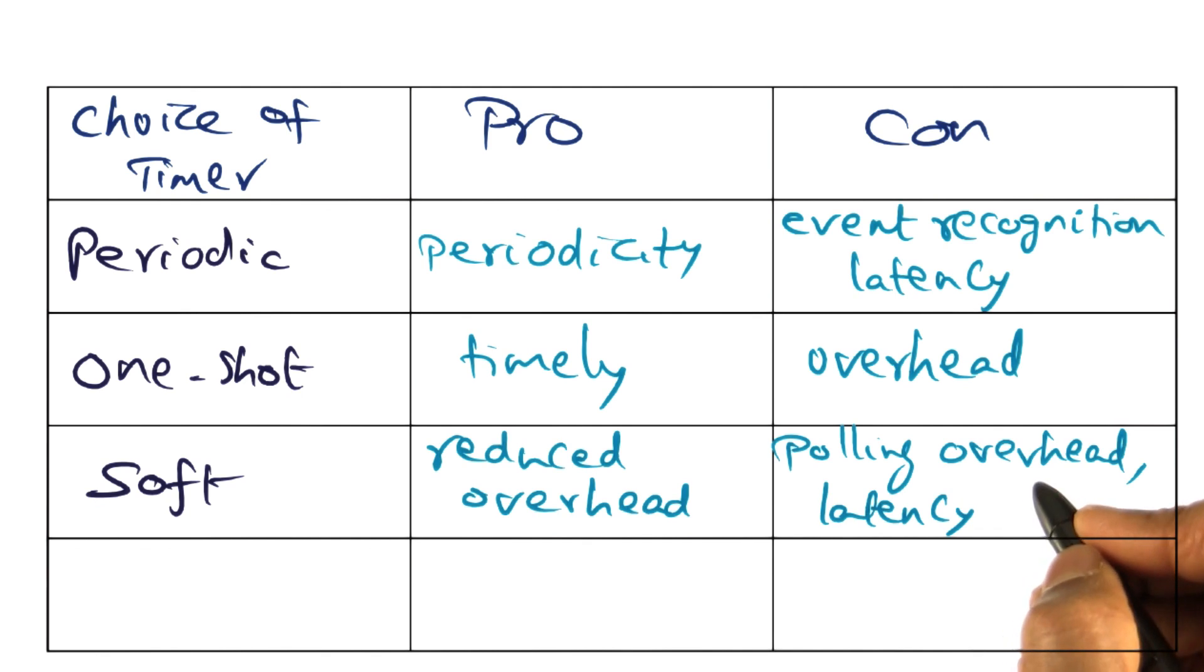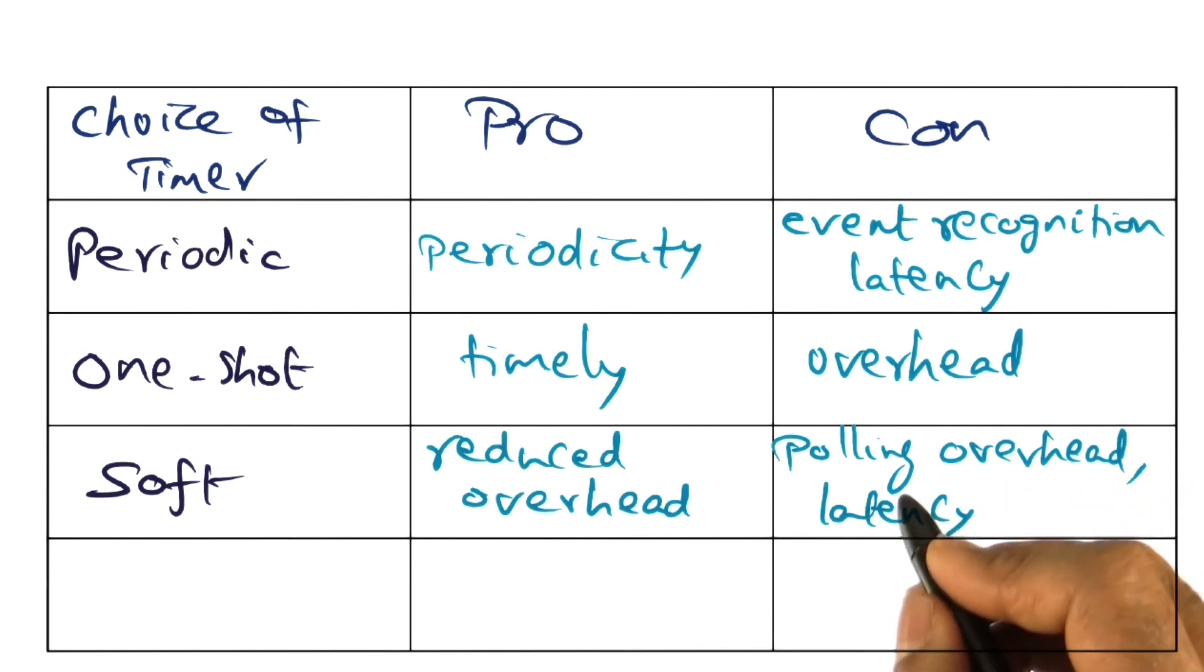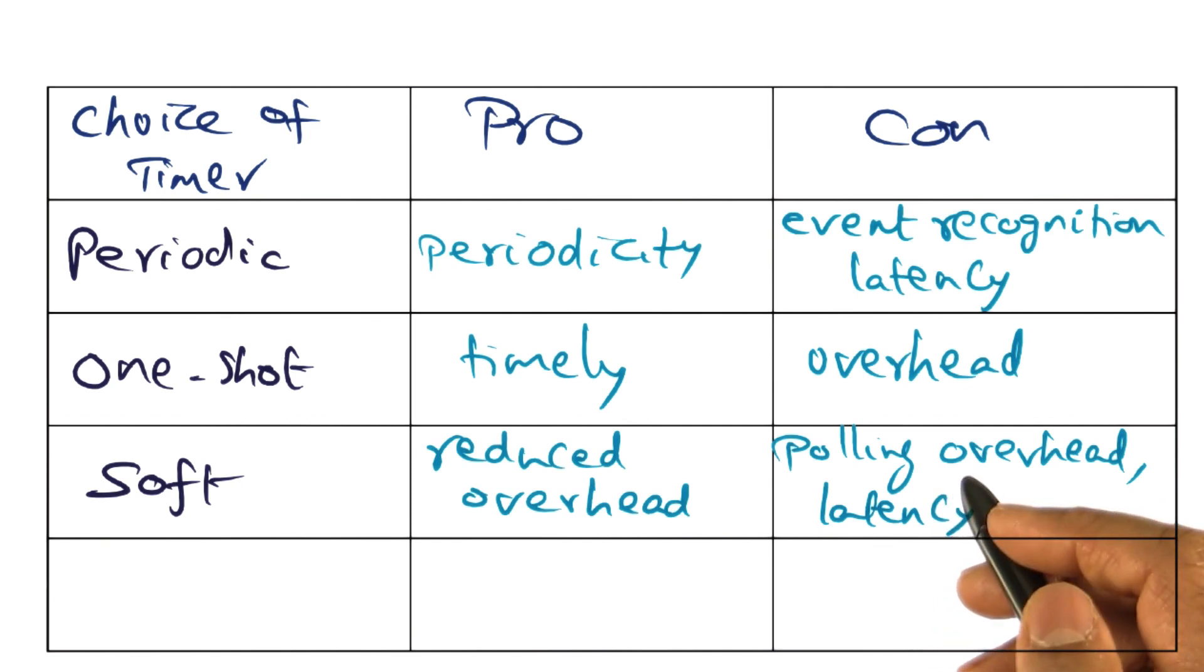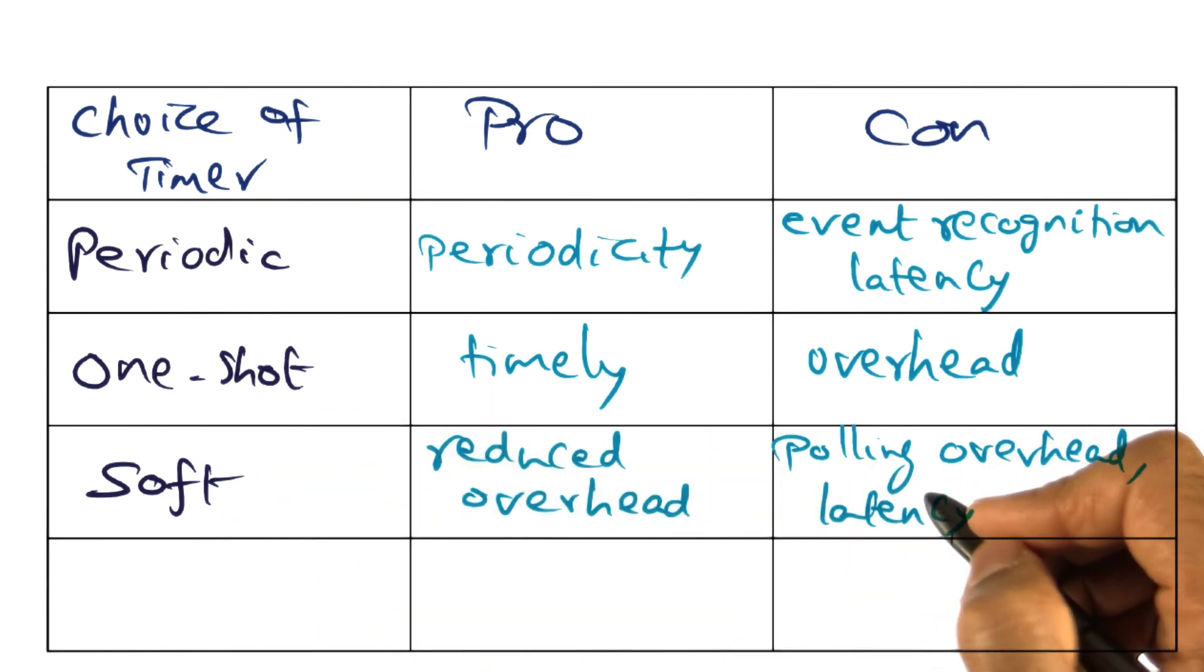But the downside of the polling method is the fact that there is latency associated with that. And there is also the fact that you have to poll all the events to see if any of them have expired. And there is an overhead associated with that. These are the two cons for a soft timer.